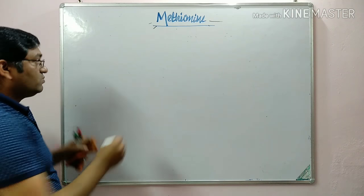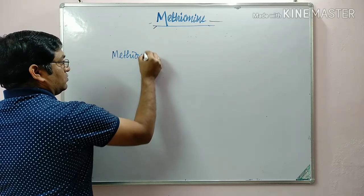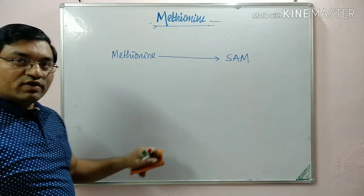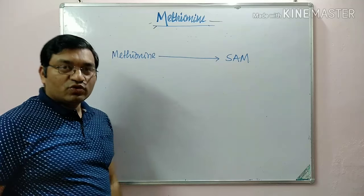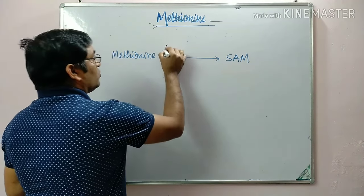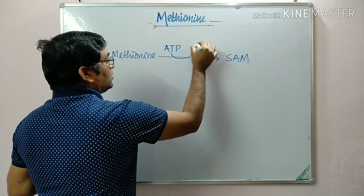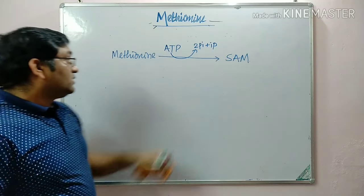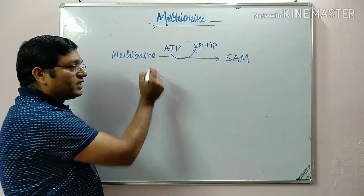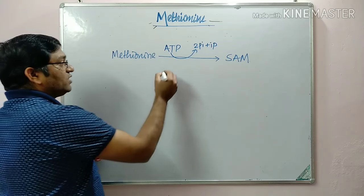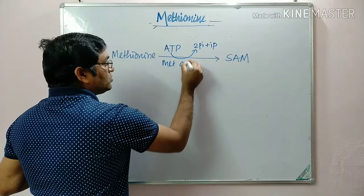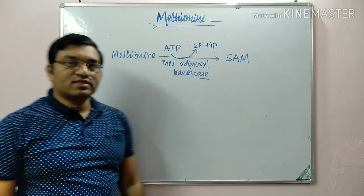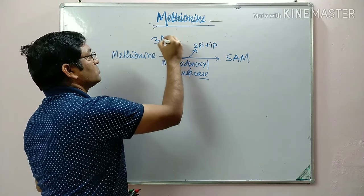In methionine metabolism, methionine is converted into S-Adenosyl Methionine (SAM), which is a universal methyl donor. This is also known as the activation of methionine. One molecule of ATP is required here; this ATP is converted into inorganic pyrophosphate and inorganic phosphate. There is transfer of the adenosyl group from ATP to the sulfur of methionine, forming S-Adenosyl Methionine, catalyzed by Methionine Adenosyl Transferase. As three energy bonds are utilized, it is equivalent to three ATP molecules, making this reaction irreversible.